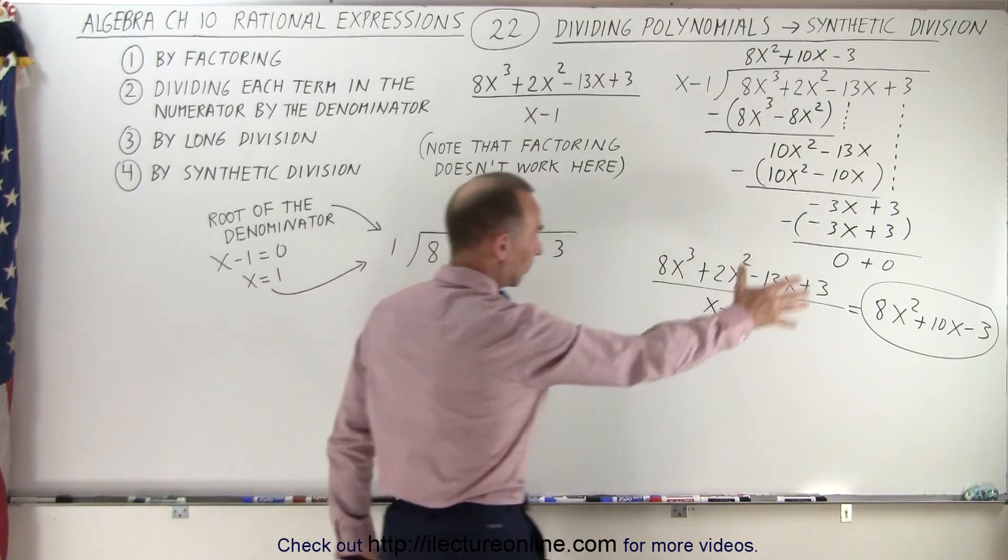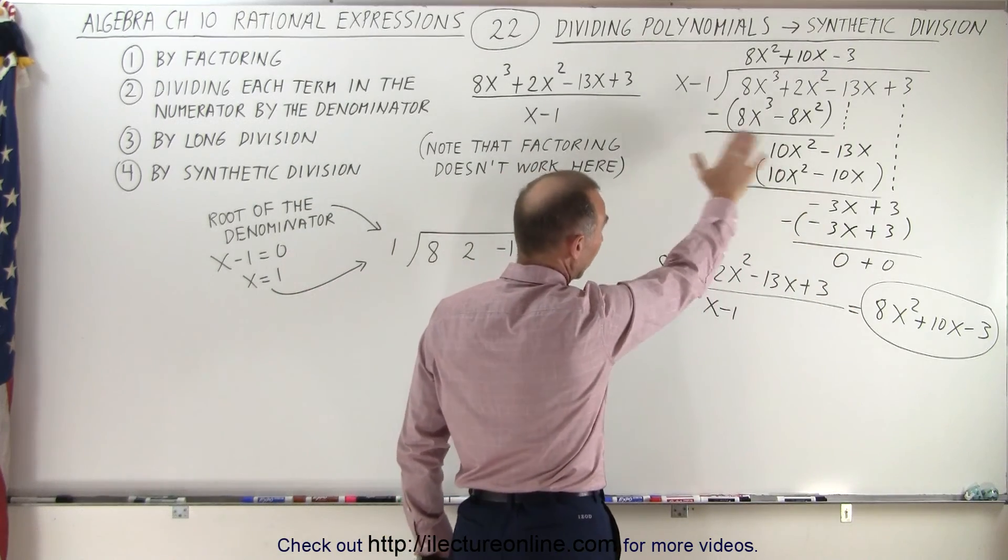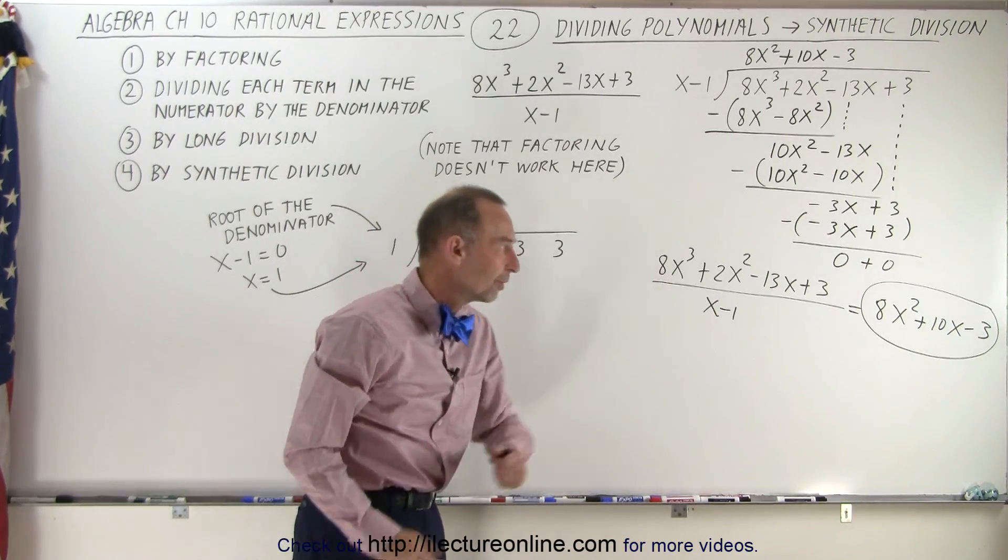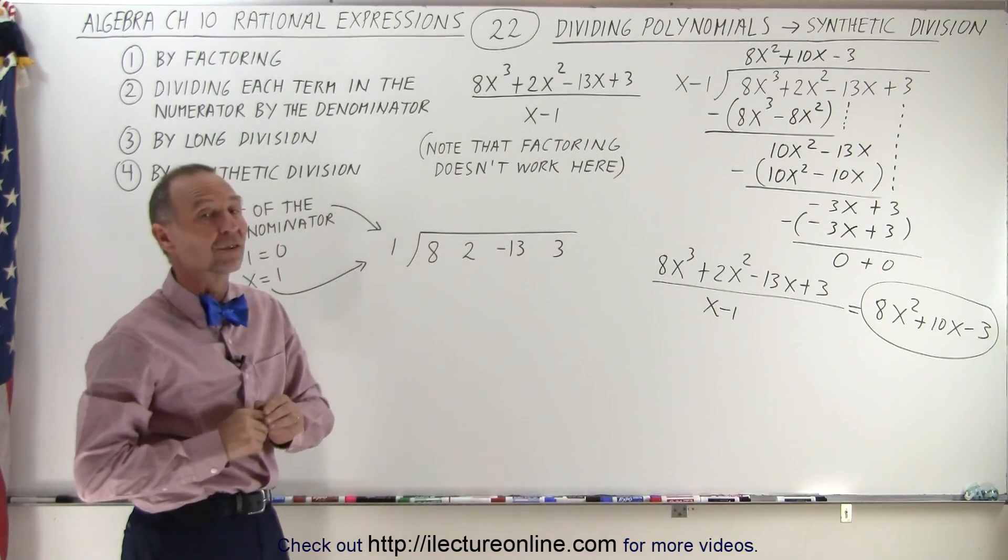So here we left the problem from the previous video on, where we used long division, where we took this numerator divided by x minus 1, and so the result was 8x squared plus 10x minus 3.